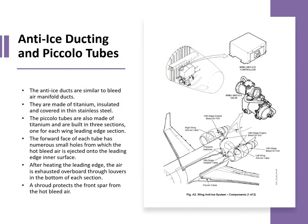The anti-ice ducts are similar to the bleed air manifold ducts - made of titanium with a thin stainless steel outer covering to protect the surrounding structure from heat. The piccolo tubes are also made from titanium, made up of three sections for each wing leading edge section. The forward face of each tube has tiny holes from which bleed air is ejected, spraying onto the leading edge inner surface. After heating the leading edge, air is exhausted overboard through louvres in the bottom of each section, with a shroud protecting the front spar from hot bleed air.